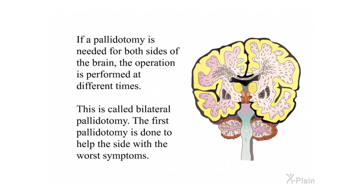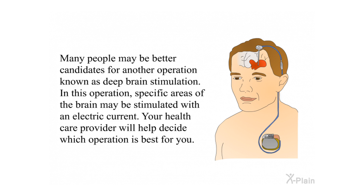If a pallidotomy is needed for both sides of the brain, the operation is performed at different times; this is called bilateral pallidotomy. The first pallidotomy is done to help decide which side has the worst symptoms. Many people may be better candidates for another operation known as deep brain stimulation, in which specific areas of the brain are stimulated with an electric current. Your health care provider will help decide which operation is best for you.